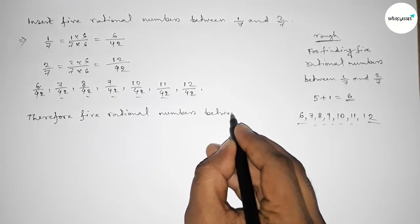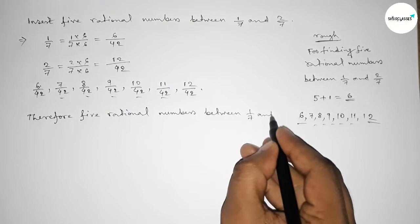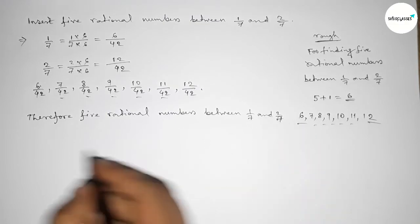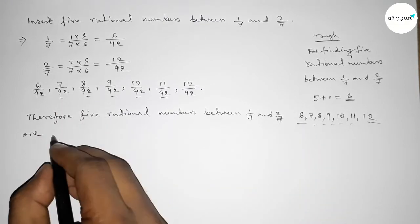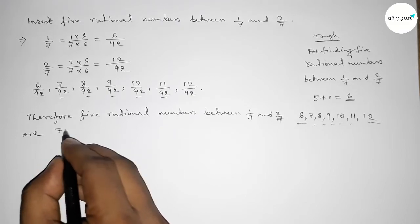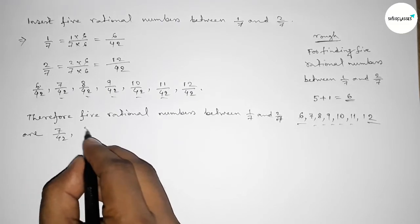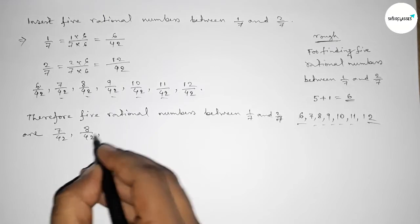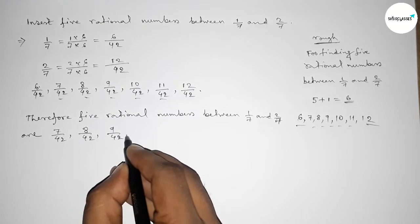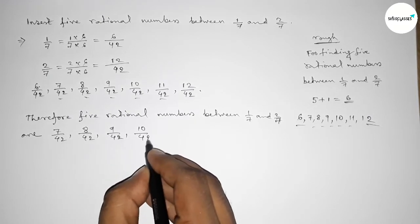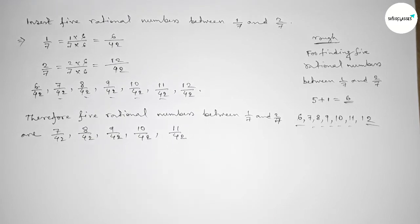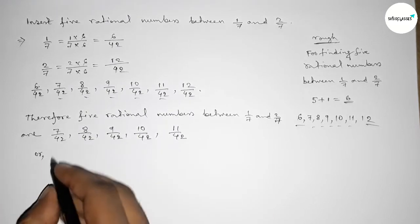Therefore, 5 rational numbers between 1/7 and 2/7 are: first one is 7/42, then 8/42, then 9/42, then 10/42, and last 11/42.